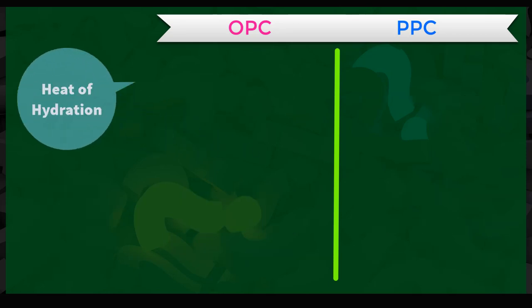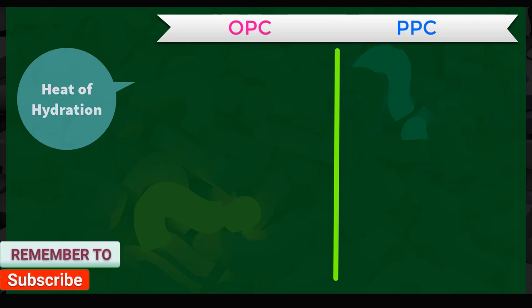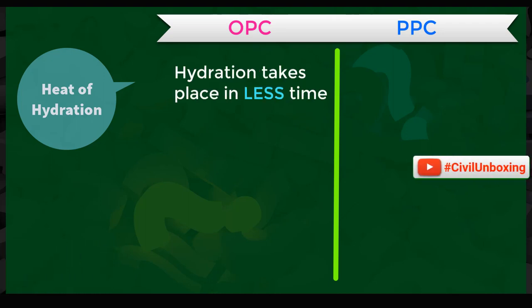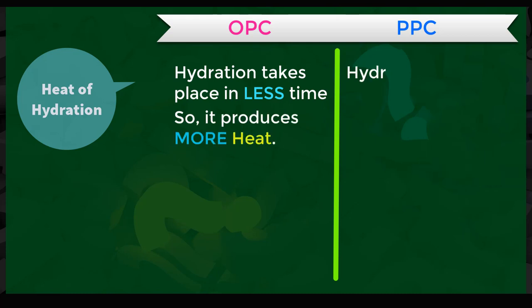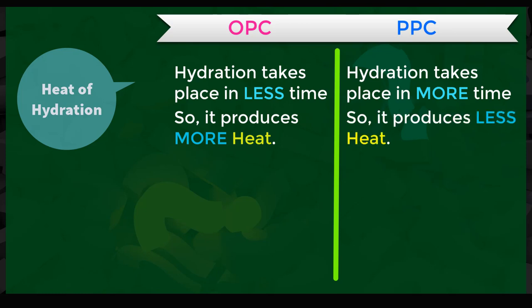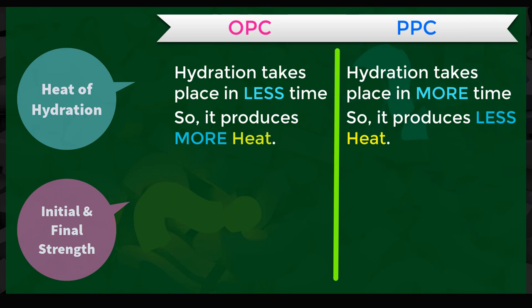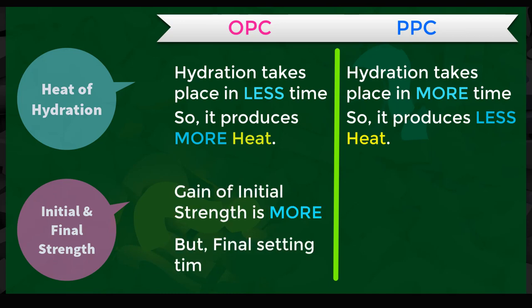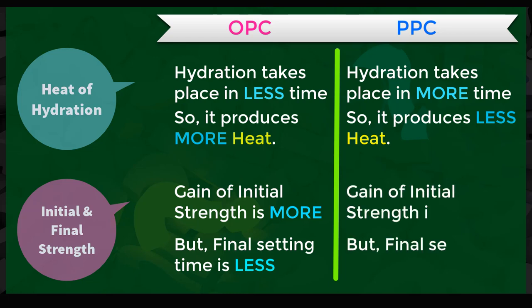The most important factor in cement is heat of hydration. OPC cement hydration takes place in less time, so it produces more heat. PPC cement takes more time and produces less heat, so curing time and effort is less in PPC. Gain of initial strength is more in OPC, but the final setting time of OPC is comparatively lower than PPC. In PPC, gaining of initial strength is less but final strength is more, making OPC suitable for time-sensitive and fast construction.